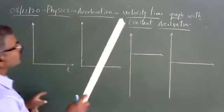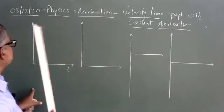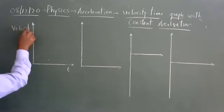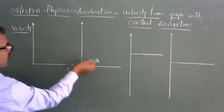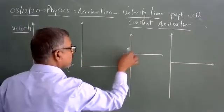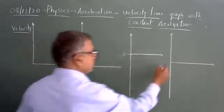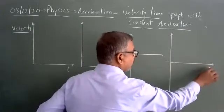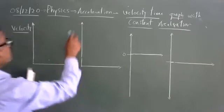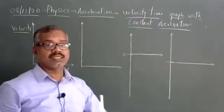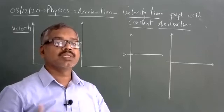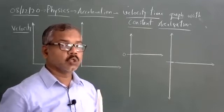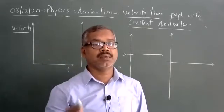In continuation, we are talking about acceleration where this is the velocity axis and this is the time axis. I can write it as a velocity-time graph — positive velocity above, negative velocity below. This is called a velocity-time graph with constant acceleration. Constant acceleration means the acceleration value is fixed. Whenever you have a velocity-time graph, if the slope is constant, it is called a velocity-time graph with constant acceleration.